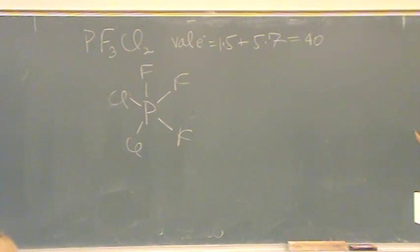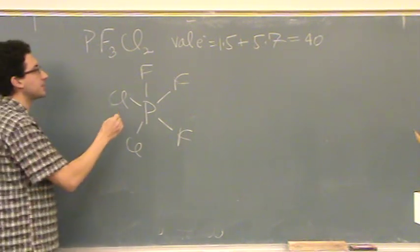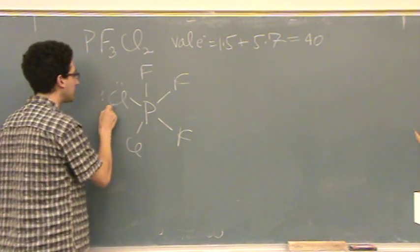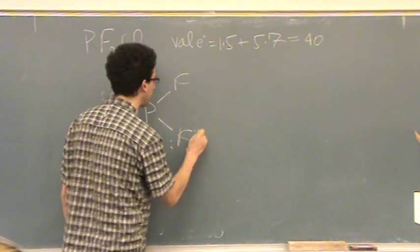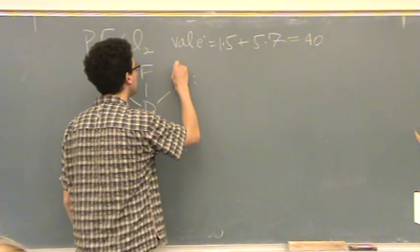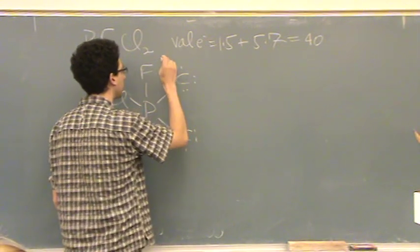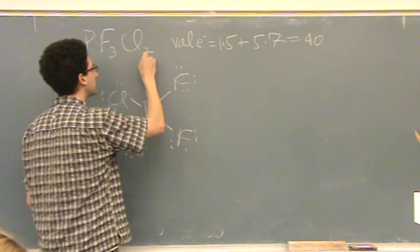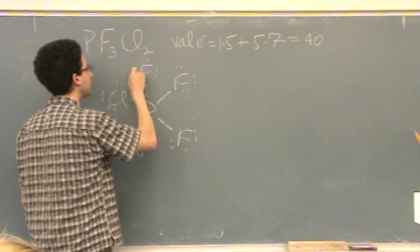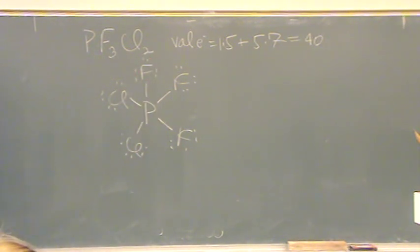Okay? Now, let's fill in the lone pairs on the terminal atoms. So I've got ten of 40, 12, 14, 16, 18, 20, 22, 24, 26, 28, 30, 32, 34, wait, 36, 38, 40. There we go. I think I got it right.